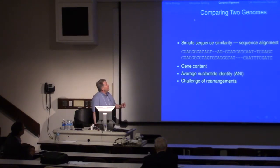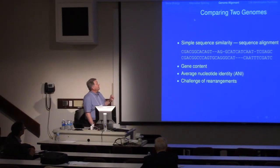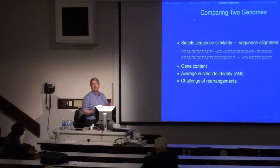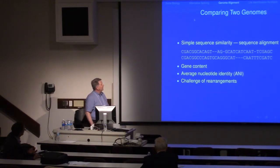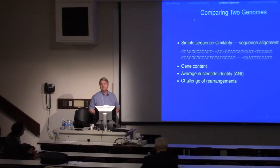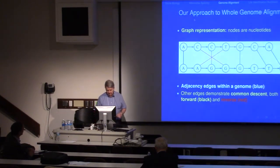We were interested in comparing two genomes to see how similar they were. The traditional way of doing that is sequence alignment — you come up with a matching of characters as best you can, with spaces where you have insertions and deletions. You can also look at the gene content of two genomes and ask which genes are in each genome and how closely they match. Another approach we've looked at is average nucleotide identity — a measure of how similar blocks in one genome are to blocks in the other. In all cases, rearrangements present a very challenging situation.